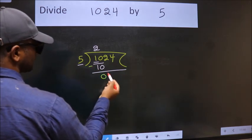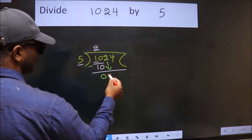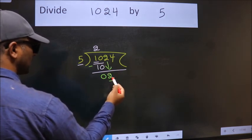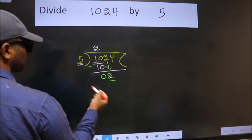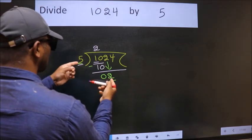After this, bring down the beside number. So 2 down. Now here we have 2, here 5. 2 is smaller than 5.